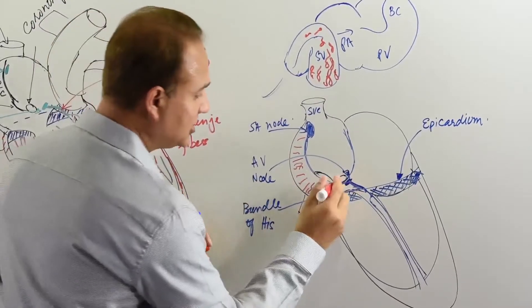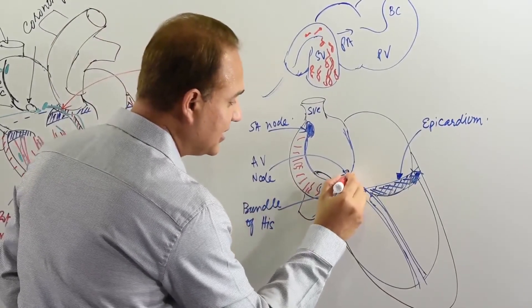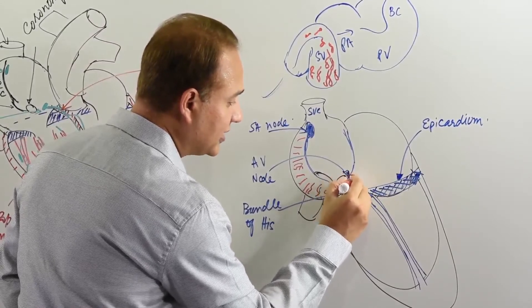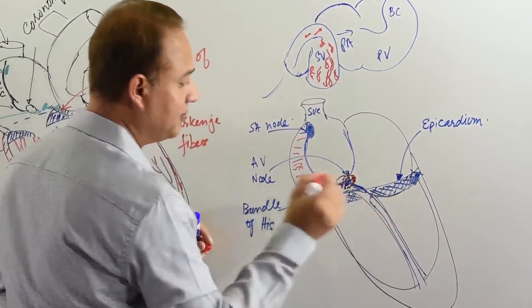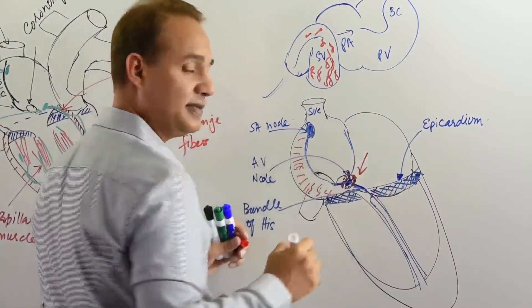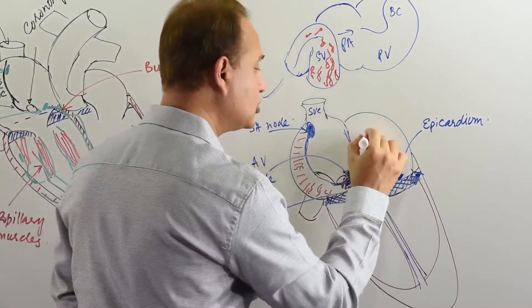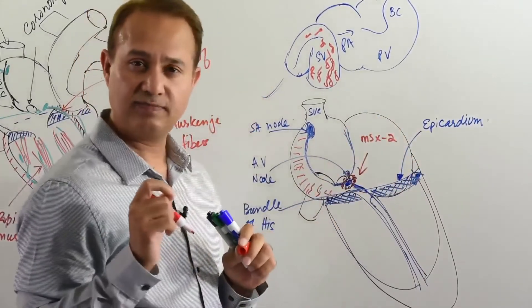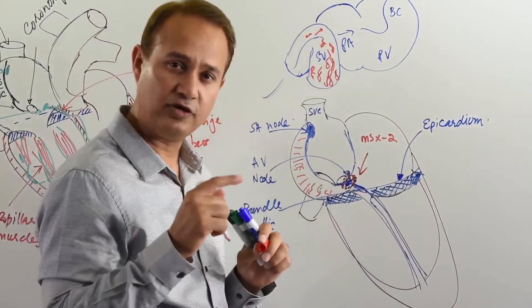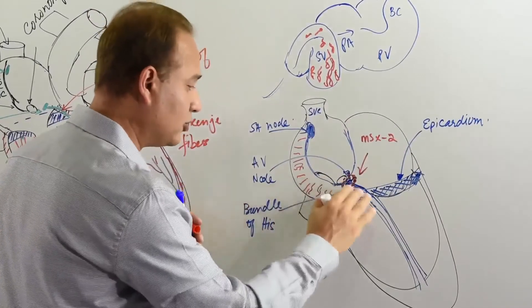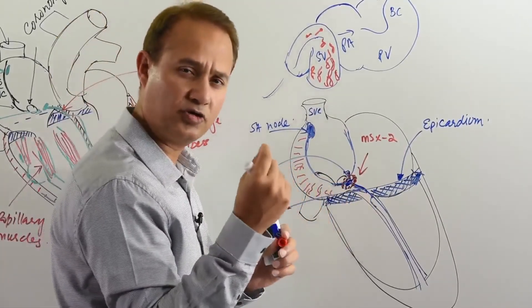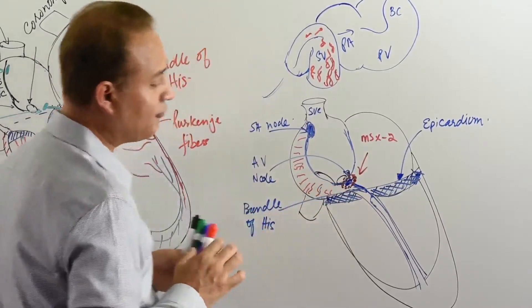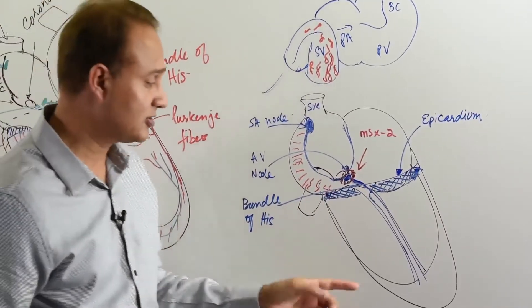The cells around the AV node become consolidated and start developing the bundle of His. These cells exhibit the MSX2 homeobox gene. They are special cells surrounding the AV node, in the area near the coronary sinus, and they form the AV node and the His-Purkinje system.